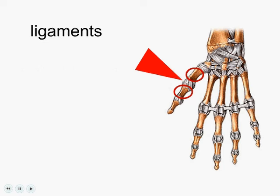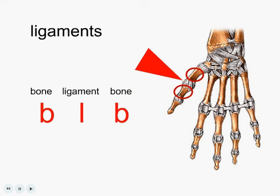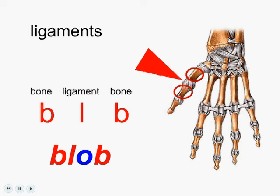One way you could try and remember that is: you've got a bone, then you've got a ligament, and then you've got another bone, and that sort of looks like the word 'blob.' So bone, ligament, bone sort of spells blob.